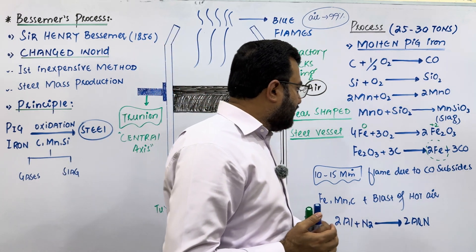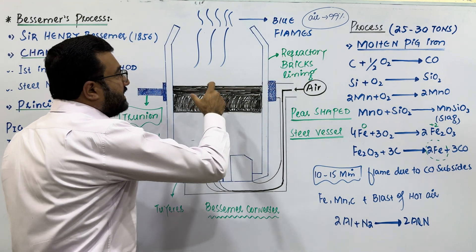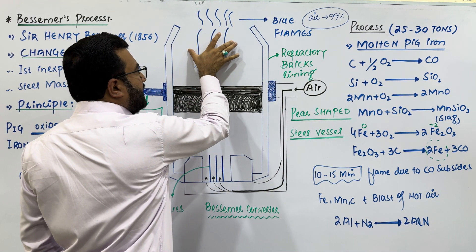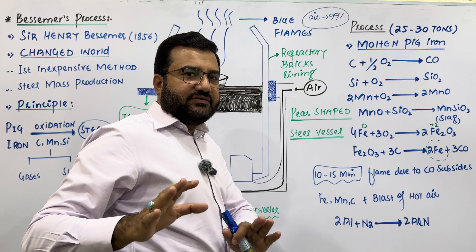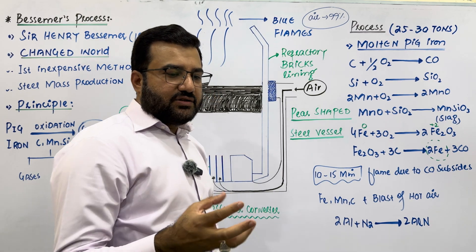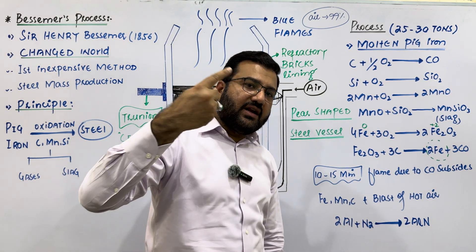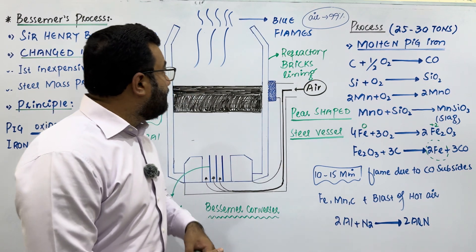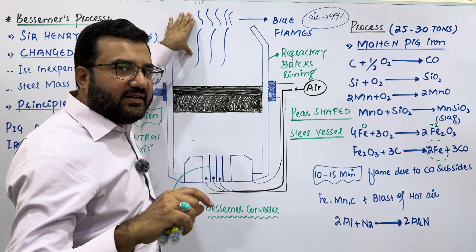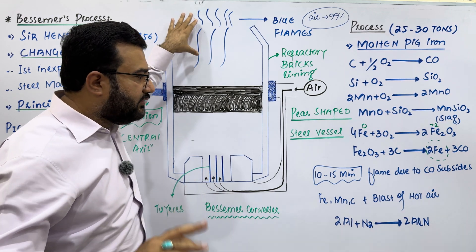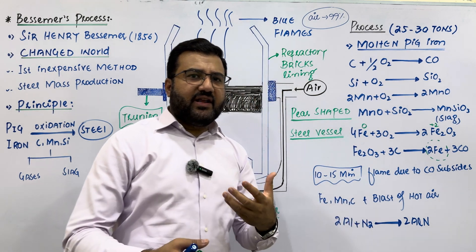After 10 to 15 minutes of the process, the blue flames at the mouth of the Bessemer converter will subside — they will be finished — because the complete carbon content of the pig iron has been oxidized. All the carbon present in pig iron is oxidized to carbon monoxide and removed. Once the blue flames subside, this is an indication that the complete carbon has been oxidized and removed.